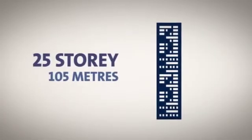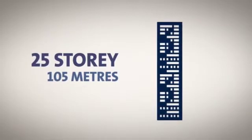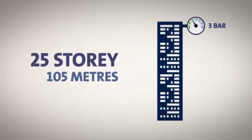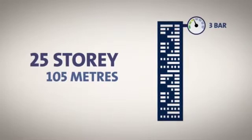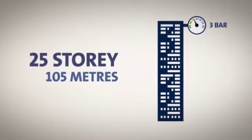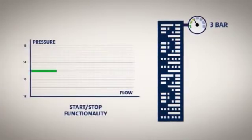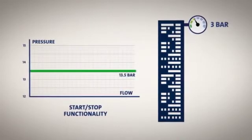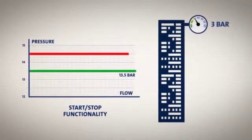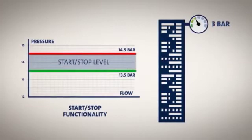Let's take a 25-storey building, equal to 105 meters, as an example. Say you need the minimum pressure on the top floor to be 3 bar, equal to 30 meter water column. The start level must then be at least 13.5 bar and the stop level approximately 14.5 bar.